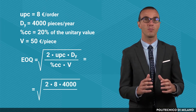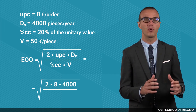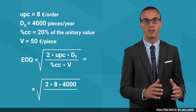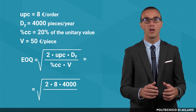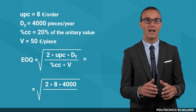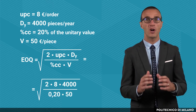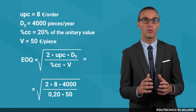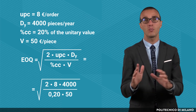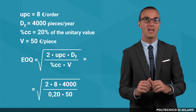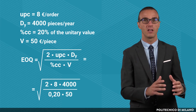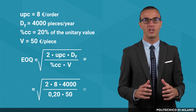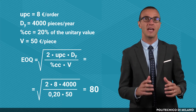The EOQ is computed as the square root of the ratio between two parts. At the numerator, the product between the unitary procurement cost — 8 euro per order — and the yearly demand — 4000 pieces per year — multiplied by 2. At the denominator, the product between the inventory carrying cost expressed as a percentage of the item value — 20% — and the unitary item price — 50 euro per piece. Making the computations, the resulting EOQ is 80 pieces.